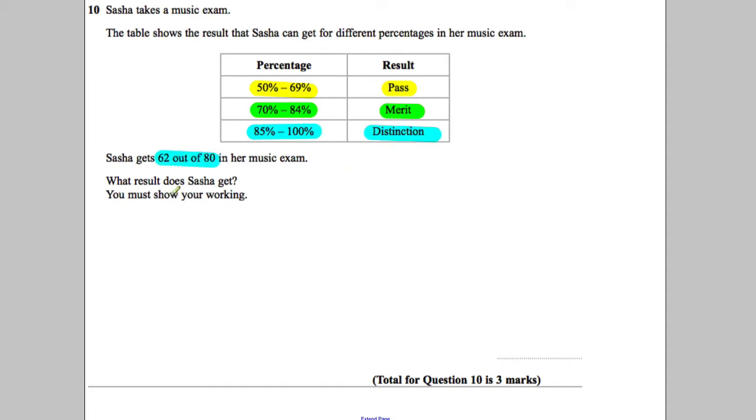She gets 62 out of 80 marks on the exam. What result does Sasha get? Okay, so this is very straightforward.